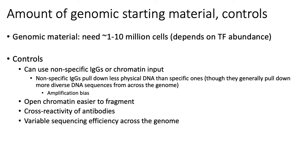Some of the reasons you need control experiments are: first, not all regions of the genome are equally likely to be fragmented — open chromatin tends to be easier to fragment than others. Second, there is variable sequencing efficiency across the genome due to sequencing or amplification bias. Finally, some transcription factors or certain domains present in transcription factors can easily be picked up by antibodies not designed to specifically target them. So even if you think your monoclonal antibody is highly specific, it may be pulling down accessory factors, which you need to identify through non-specific antibody control experiments.